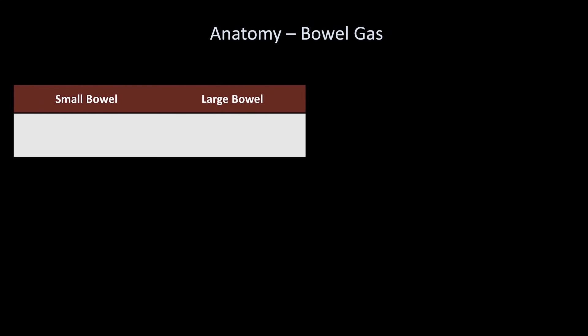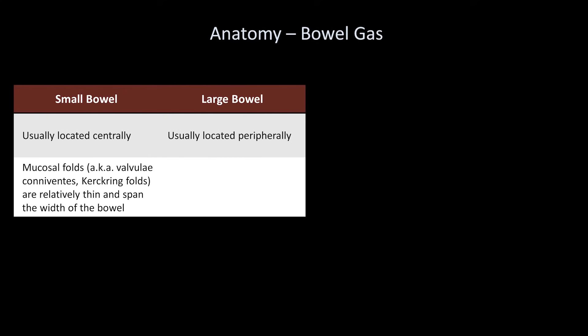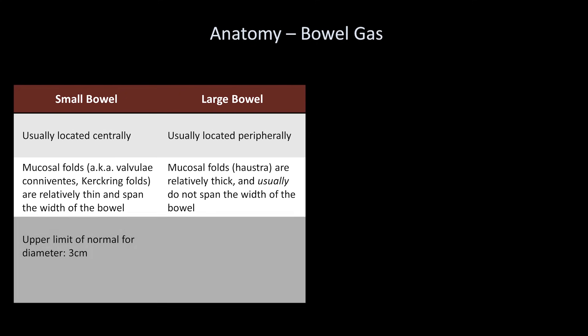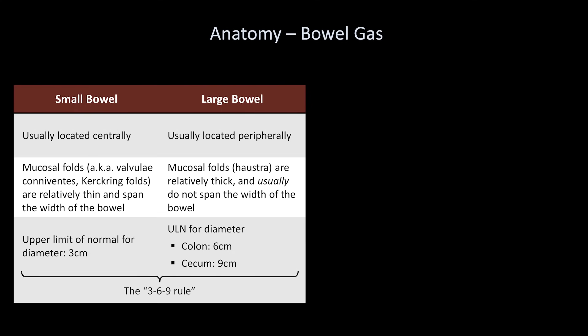Differentiating small and large bowel is not always possible, but there are a few clues. The small bowel tends to be centrally located, while the large bowel is on the periphery. The small bowel's mucosal folds, known as valvulae conniventes or Kerckring folds, are relatively thin and span the width of the bowel, while the mucosal folds in the large bowel are called haustra, which are relatively thick and usually do not span the width of the bowel. The upper limit of normal for the diameter of small bowel is 3 centimeters; for the large bowel it's 6 centimeters for most of the colon, but 9 centimeters for the cecum — known as the 3-6-9 rule.